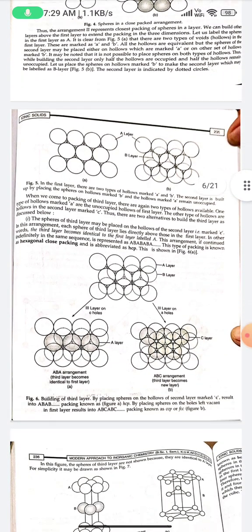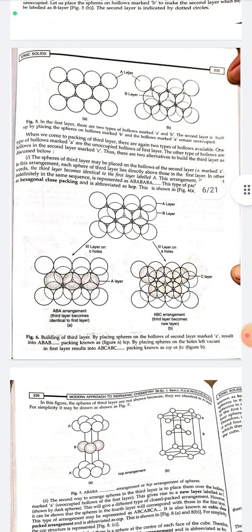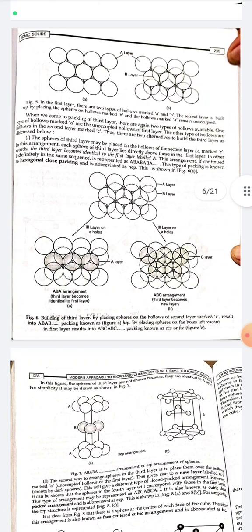When packing the third layer, there are again two types of hollows available — one type marked A (corresponding to unoccupied hollows of the first layer) and another type marked C. If the spheres of the third layer are placed such that each sphere lies directly above those in the first layer, the third layer becomes identical to the first layer. This arrangement follows the sequence A B A B A B and is known as hexagonal close packing, abbreviated as HCP.